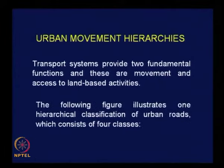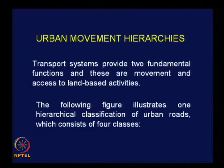We have two conflicting objectives and as planners we must try to achieve both simultaneously. The answer is yes, it is possible — that is why we exist as transport system planners. Both objectives are reasonable: one would like to move faster when traveling over longer distances in urban areas, the other might like to access land uses. The following figure illustrates one hierarchical classification of urban roads which consists of four classes of roads, and we will understand how it is possible to achieve both objectives.